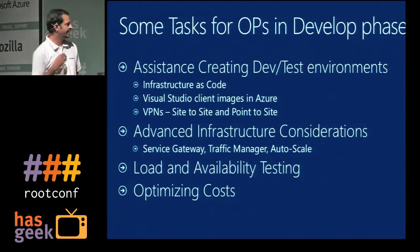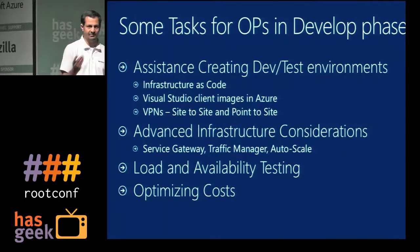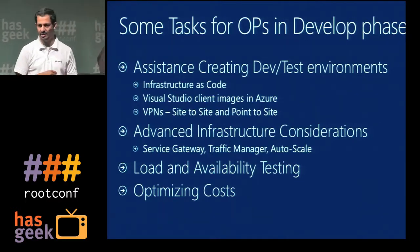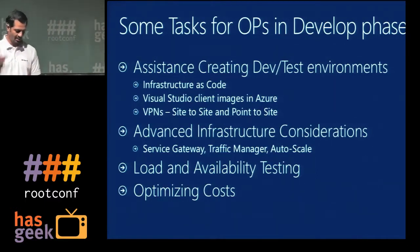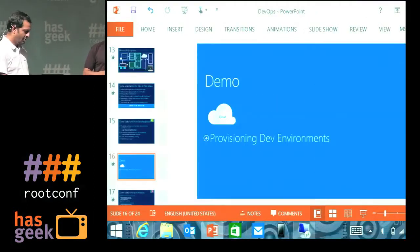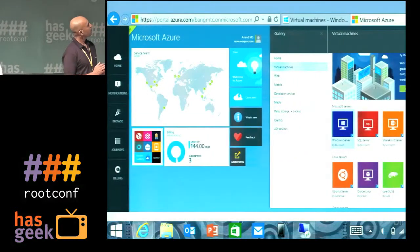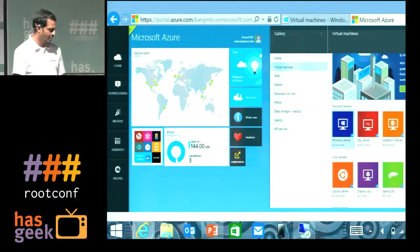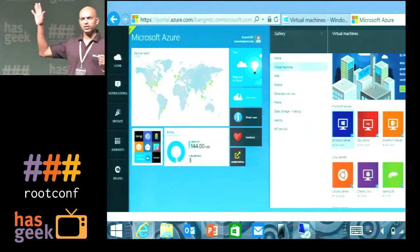Advanced infrastructure considerations: things like how do I have a service gateway, a traffic manager, something which will do load balancing or redirecting traffic coming from a particular geography to a particular back-end infrastructure. These are things you can deliver out of the cloud. Now, when you talk about cloud, let me quickly show you how Windows Azure — Microsoft Azure — looks. Quick question: how many of you have heard of Windows Azure?